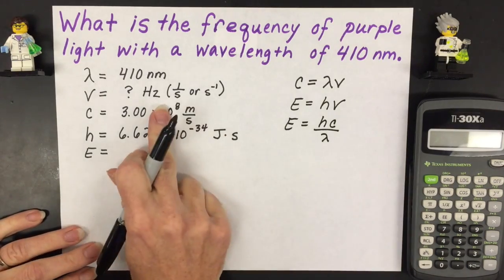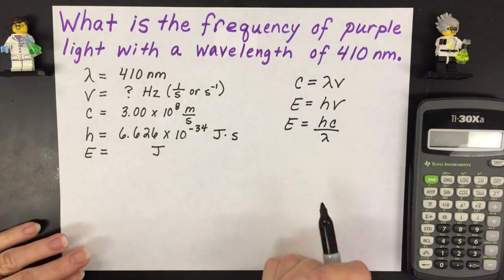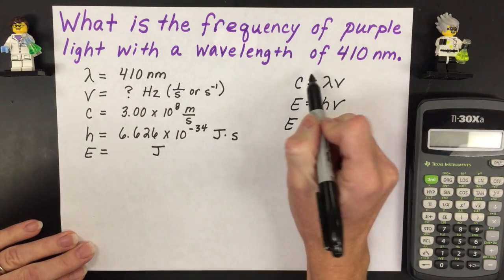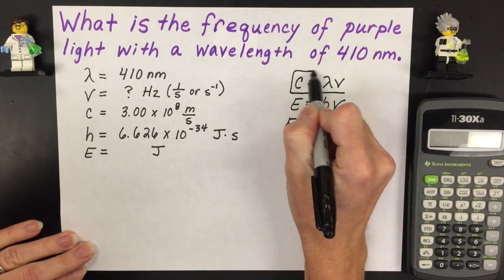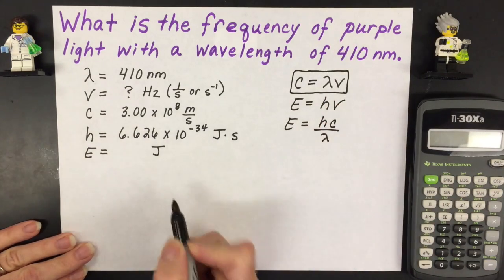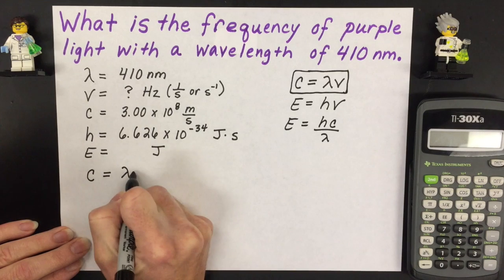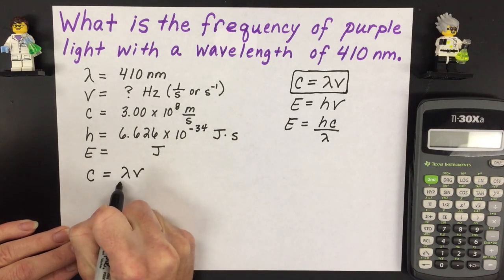So the first thing I'm going to do is look at what I'm given and then look at my equations and decide which one's going to help me solve for in this case frequency. And the answer is this one but it's not written in a form that I can use directly so I have to isolate for the variable that I'm trying to solve for. And in this case it's the frequency.